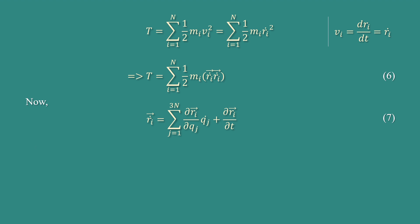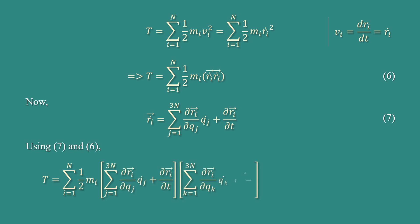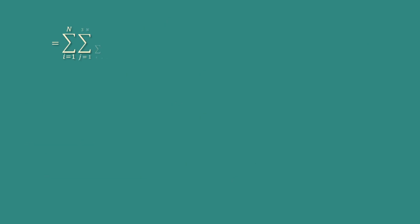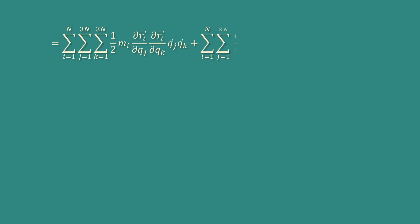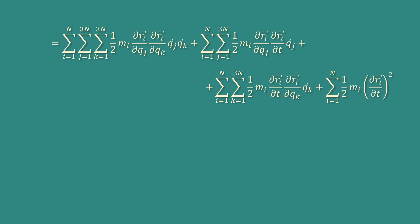Using equations 7 and 6, we get T = Σᵢ₌₁ᴺ ½Mᵢ × [Σⱼ₌₁³ᴺ (∂rᵢ/∂qⱼ)q̇ⱼ + ∂rᵢ/∂t] · [Σₖ₌₁³ᴺ (∂rᵢ/∂qₖ)q̇ₖ + ∂rᵢ/∂t]. Expanding this product gives T = Σᵢ Σⱼ Σₖ ½Mᵢ(∂rᵢ/∂qⱼ)(∂rᵢ/∂qₖ)q̇ⱼq̇ₖ plus cross terms.